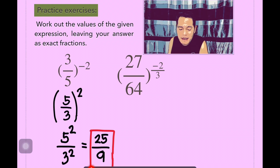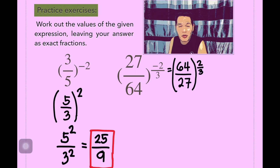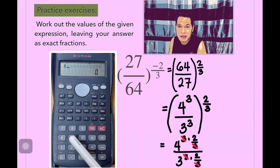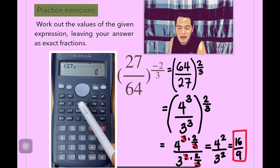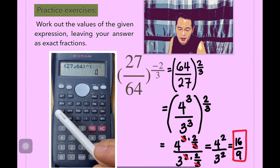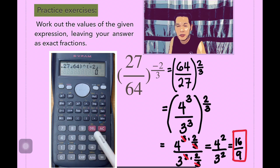Another problem: 27 over 64 to the power of negative 2 over 3. The power is negative, so we get the reciprocal of the base — 27 over 64 becomes 64 over 27 — and the sign changes to positive. Then we simplify: express 64 as 4 to the power of 3, and 27 as 3 to the power of 3. We distribute the exponent 2 thirds and multiply the exponents, doing cancellation. The remaining is 4 to the power of 2 over 3 to the power of 2, which equals 16 over 9.